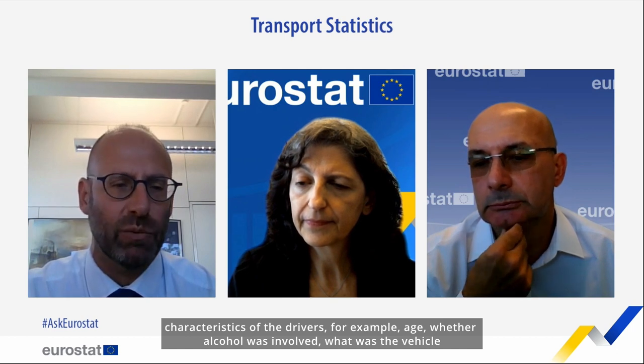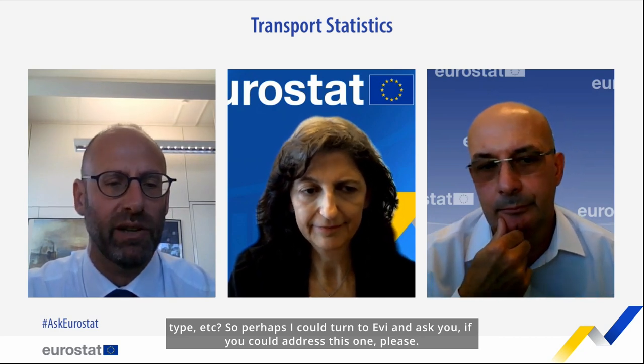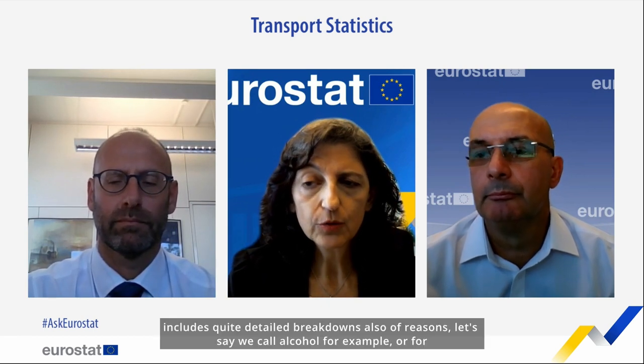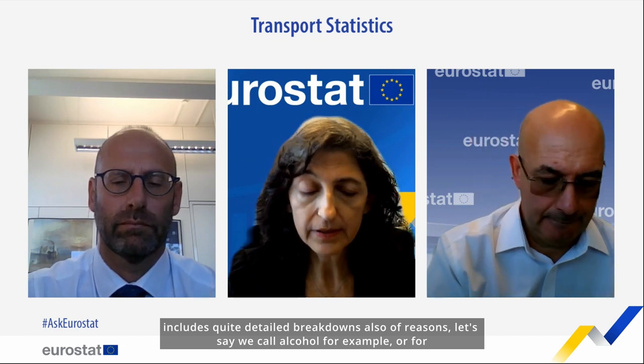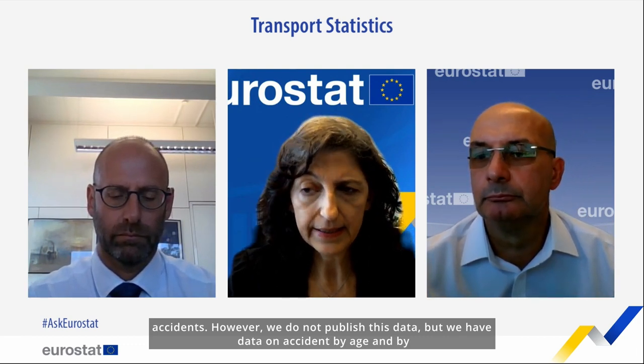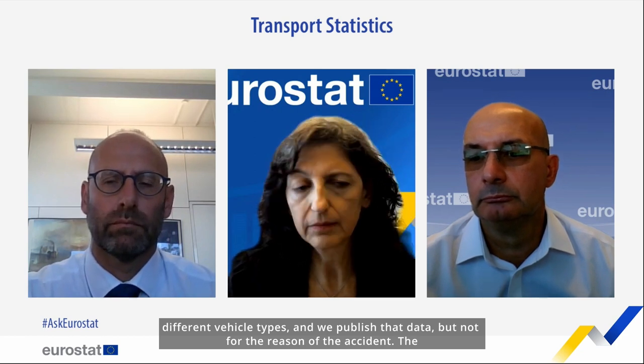There's a question on road accidents data — would there be a breakdown on characteristics of drivers, for example age, whether alcohol is involved, vehicle type? Our source of data for accidents, which is the CARE database, includes quite detailed breakdowns also of reasons such as alcohol. However, we do not publish this data. We do have data on accidents by age and by different vehicle types, and we publish such data, but not for the reason of the accident — for example alcohol.